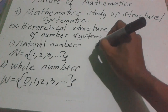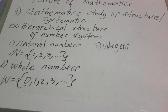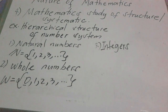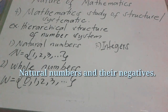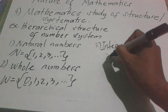Next is number three: integers. So what are integers? All the natural numbers and whole numbers are integers, but not all integers are natural numbers and whole numbers. So integers are natural numbers and their negatives. The symbol for integers is Z.